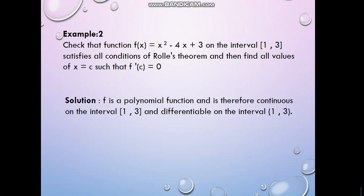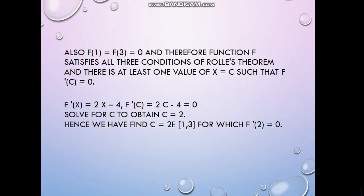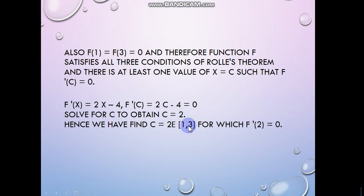Since it is a polynomial it will be differentiable. Now at the endpoints, f(1) = 1 − 4 + 3 = 0 and f(3) = 9 − 12 + 3 = 0, so f(1) equals f(3) — both equal zero — and the condition is satisfied. Finding f'(x) = 2x − 4 and setting f'(c) = 0 gives c = 2, which belongs to the open interval (1, 3). So Rolle's theorem is satisfied.